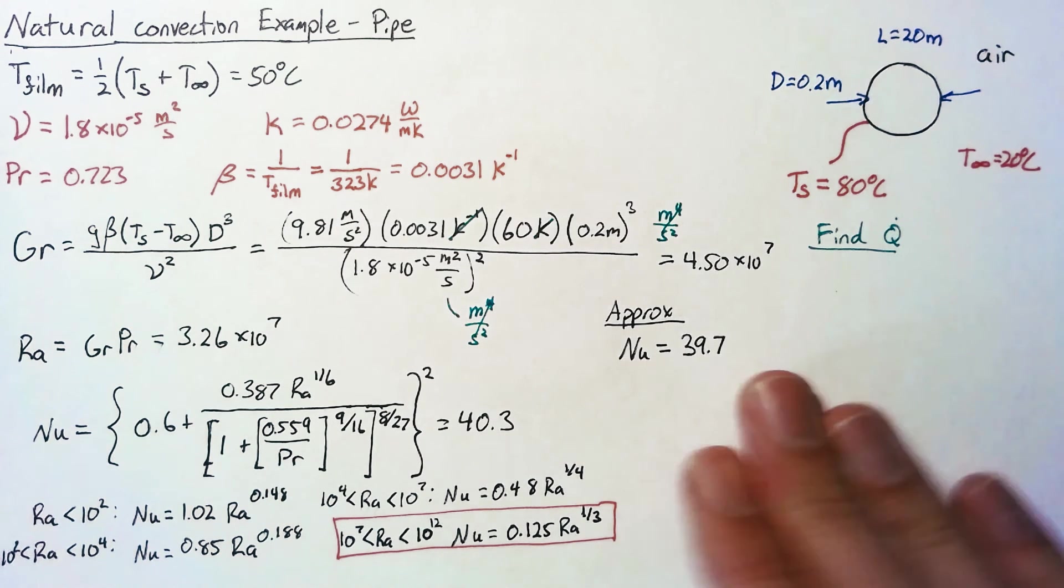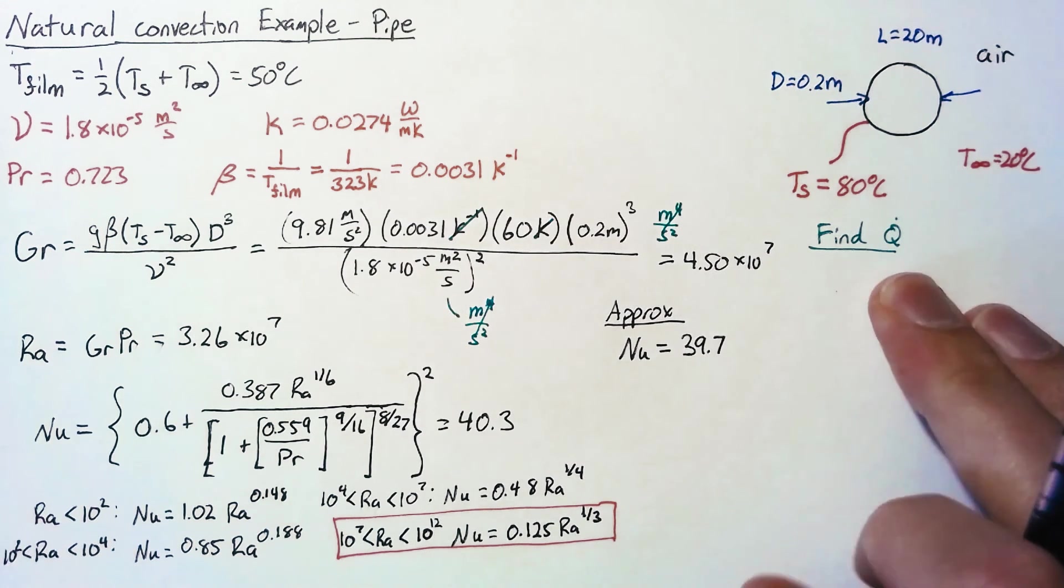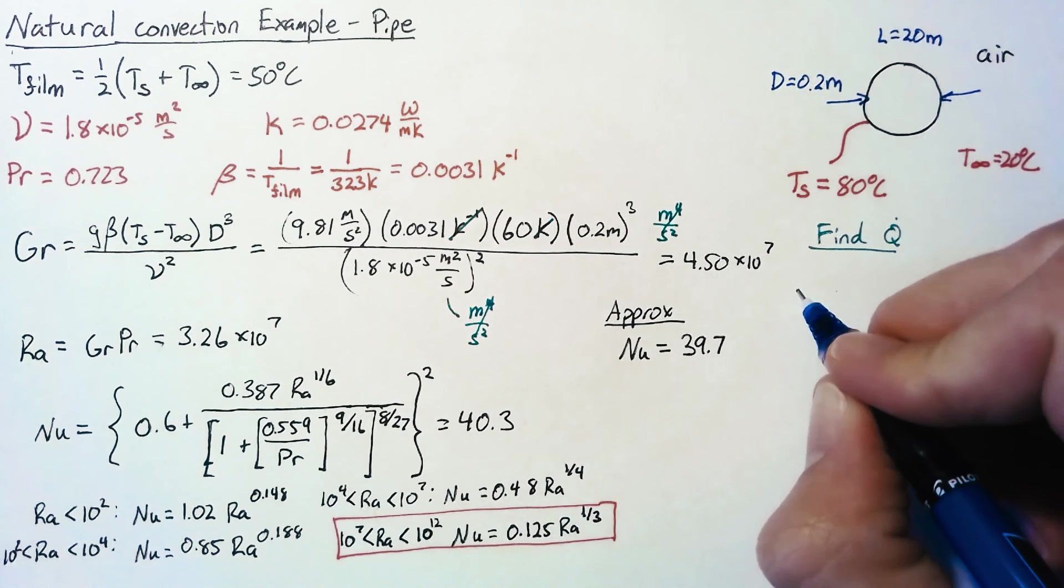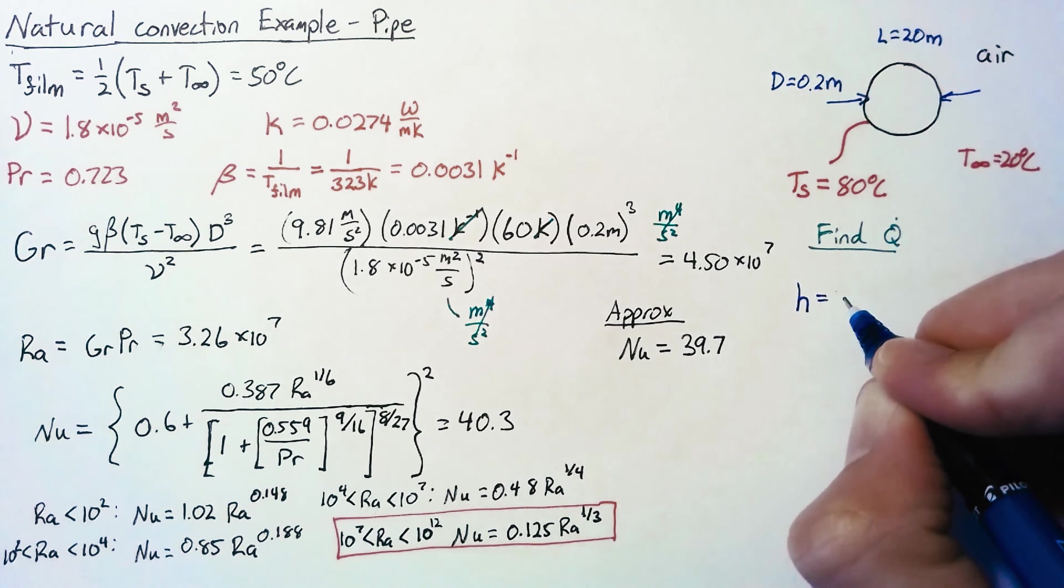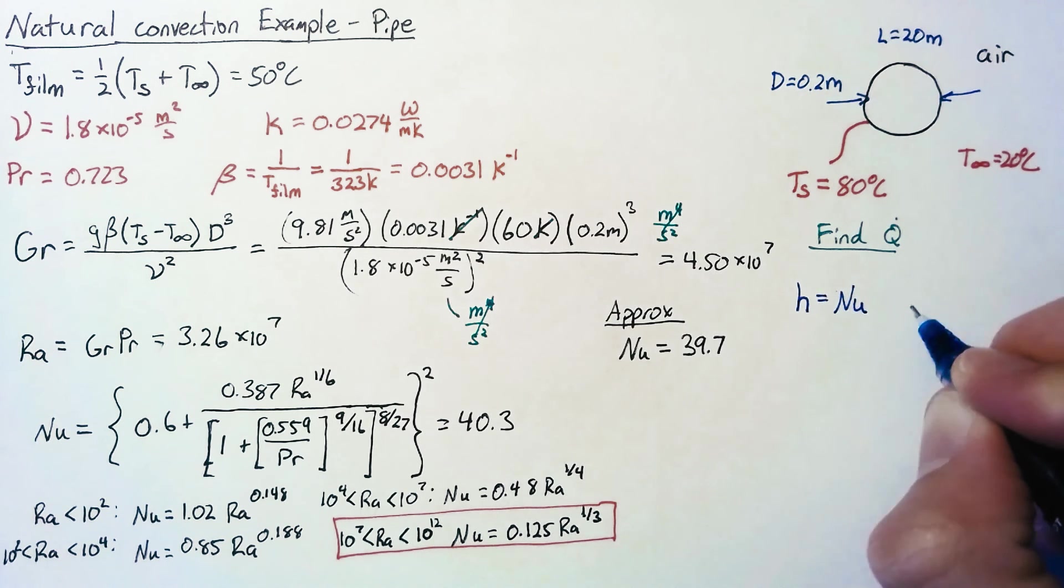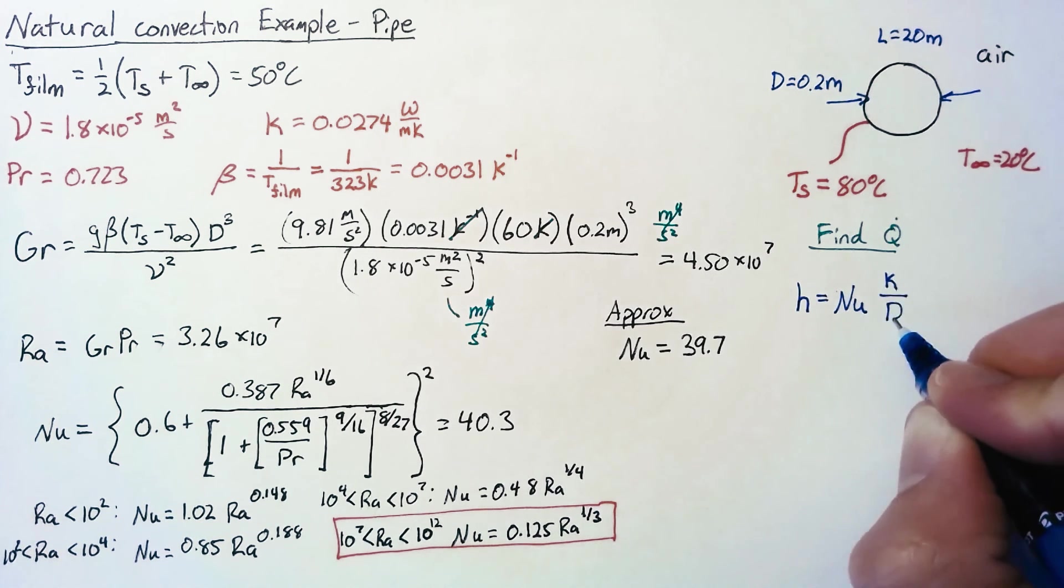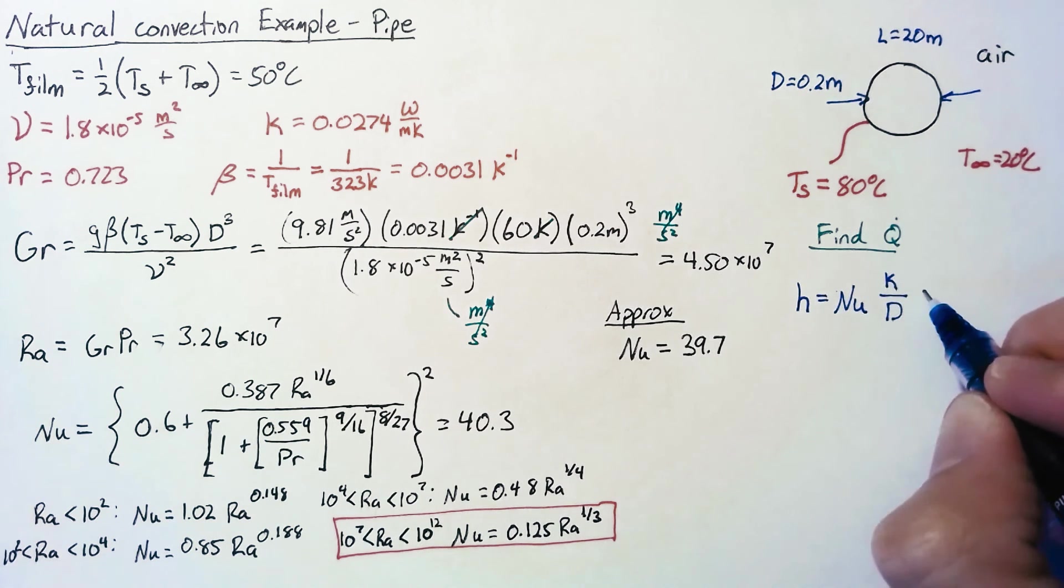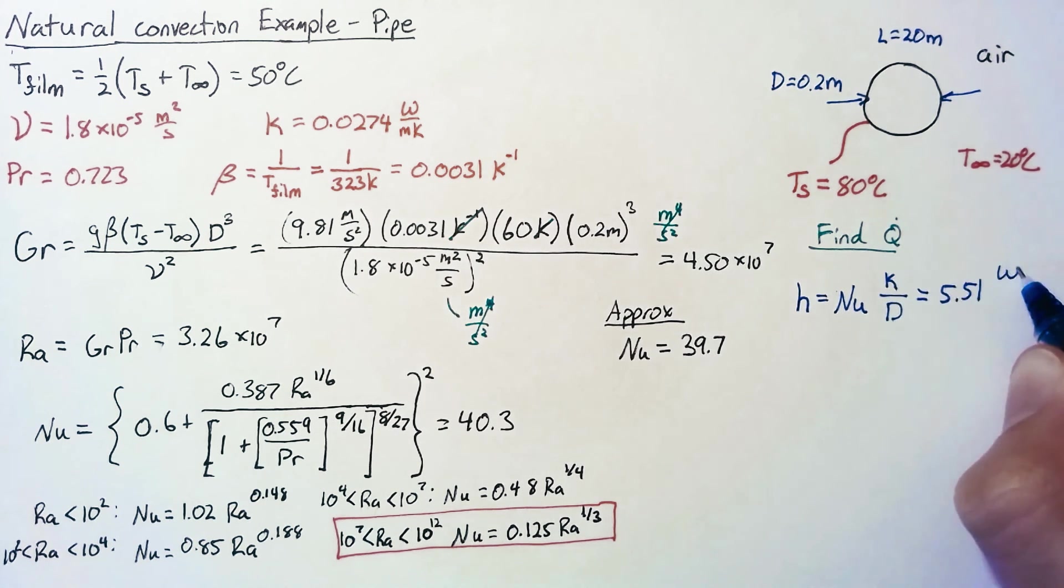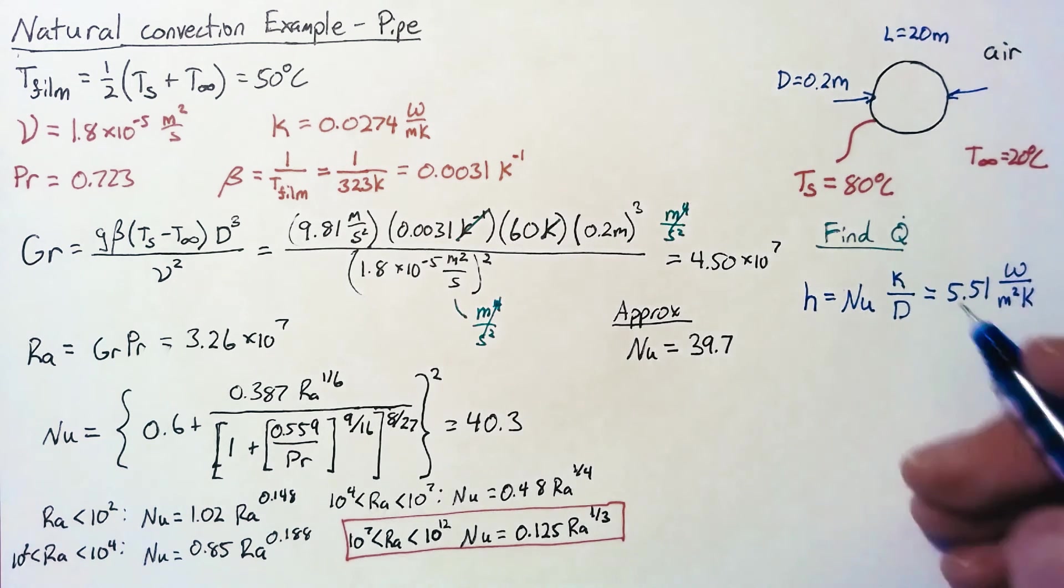Now, the last piece here is to find Q dot from the Nusselt number. So first off, we can calculate h just using the formula Nusselt number times thermal conductivity divided by our diameter. Plugging that in, we end up with 5.51 watts per meter squared kelvin.